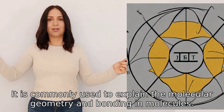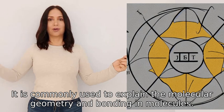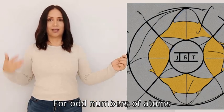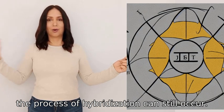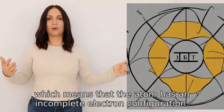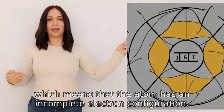It is commonly used to explain the molecular geometry and bonding in molecules. For odd numbers of atoms, the process of hybridization can still occur. The odd number indicates an unpaired electron, which means the atom has an incomplete electron configuration.